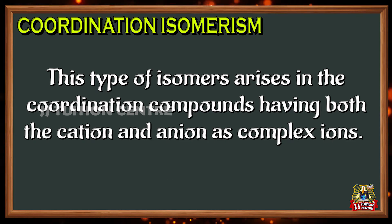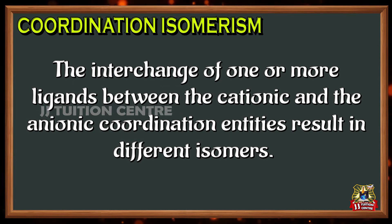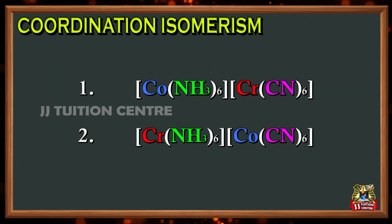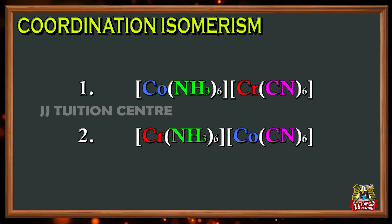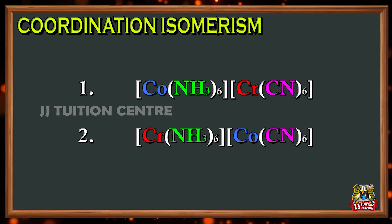Coordination isomers: these type of isomers arise in coordination compounds having both the cation and anion as complex ions. The interchange of one or more ligands between the cationic and the anionic coordination entities results in different isomers. For example, in one coordination compound the ligands ammonia and cyanide are bound respectively to cobalt and chromium, while in its coordination isomer they are reversed.